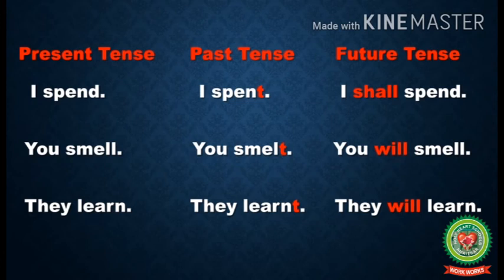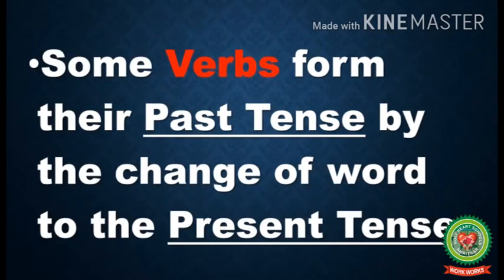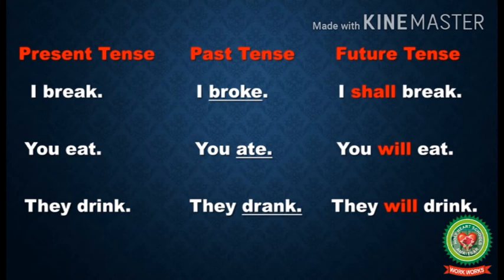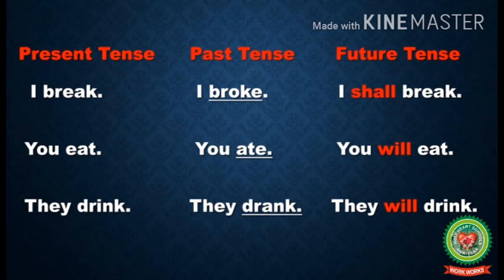Next example: they learn. Its past tense will be 'they learned' and its future tense will be 'they will learn'. Kids, some verbs form their past tense by the change of the word. First example: I break — the verb 'break' is in present tense. Its past tense will be 'I broke' and its future tense will be 'I shall break'. Second example: you eat — its past tense will be 'you ate' and its future tense will be 'you will eat'. Third example: they drink — its past tense will be 'they drank' and its future tense will be 'they will drink'.